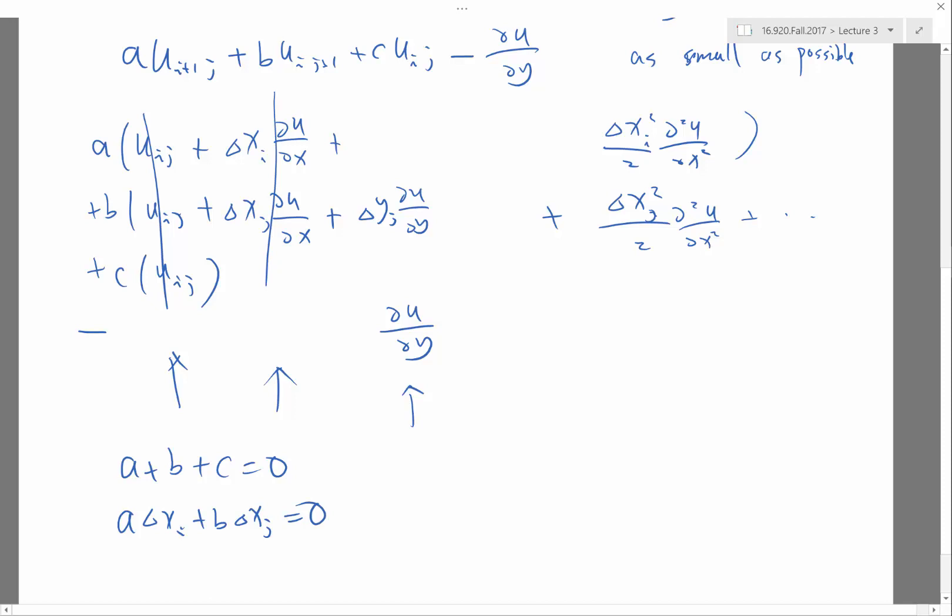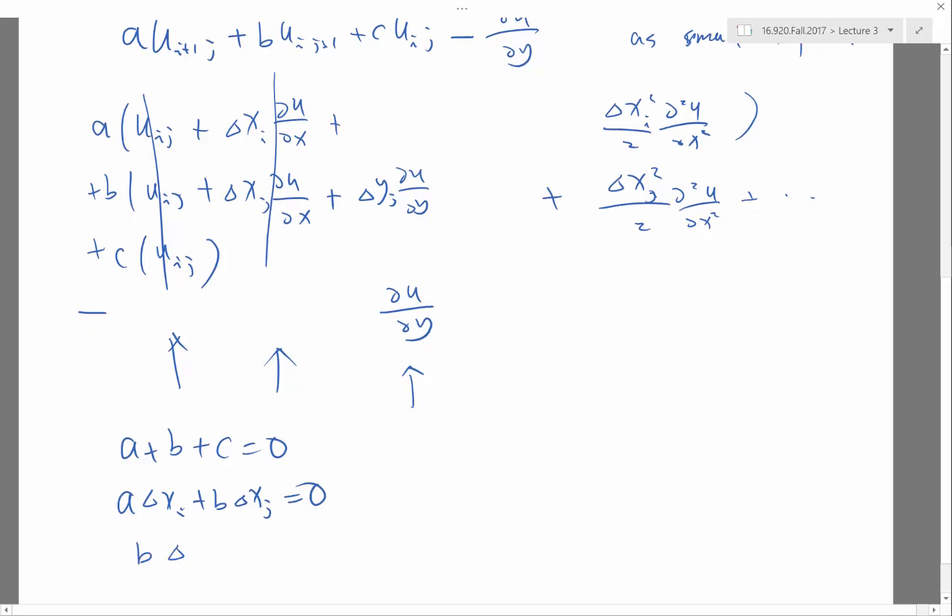And then I have to have B times Delta Y J actually has to equal to one, so that I can cancel this term.